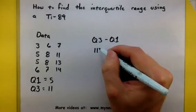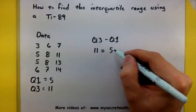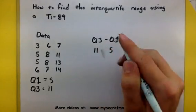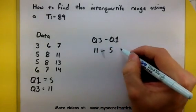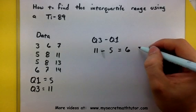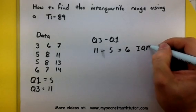Well, the calculator said Q3 was 11. Q1 was 5. So we subtract the 2, and we get an answer of 6. That's the interquartile range.